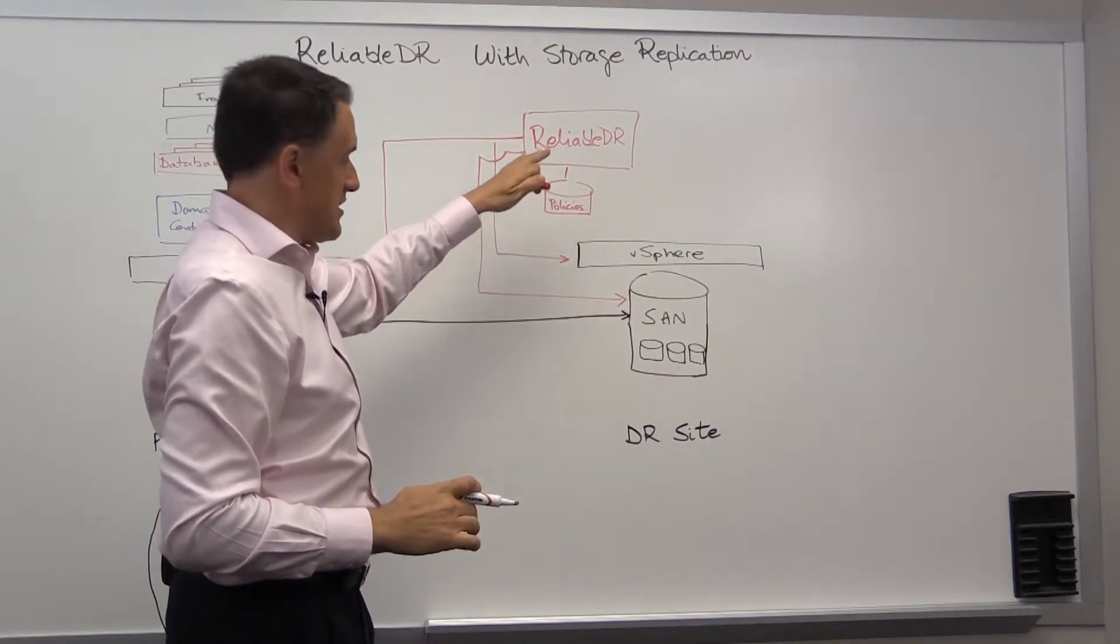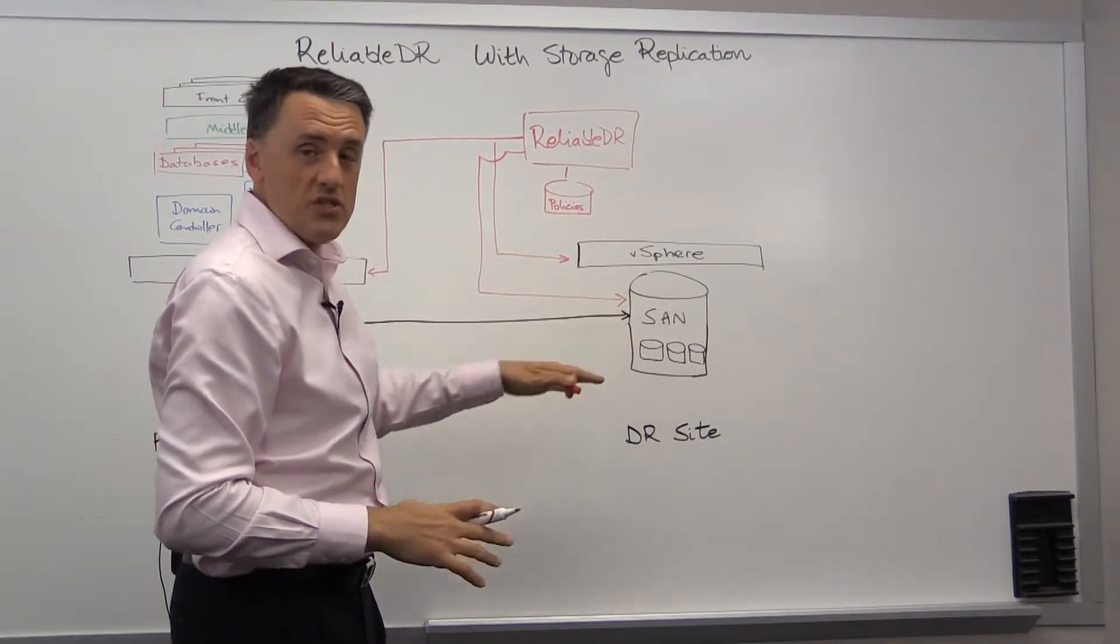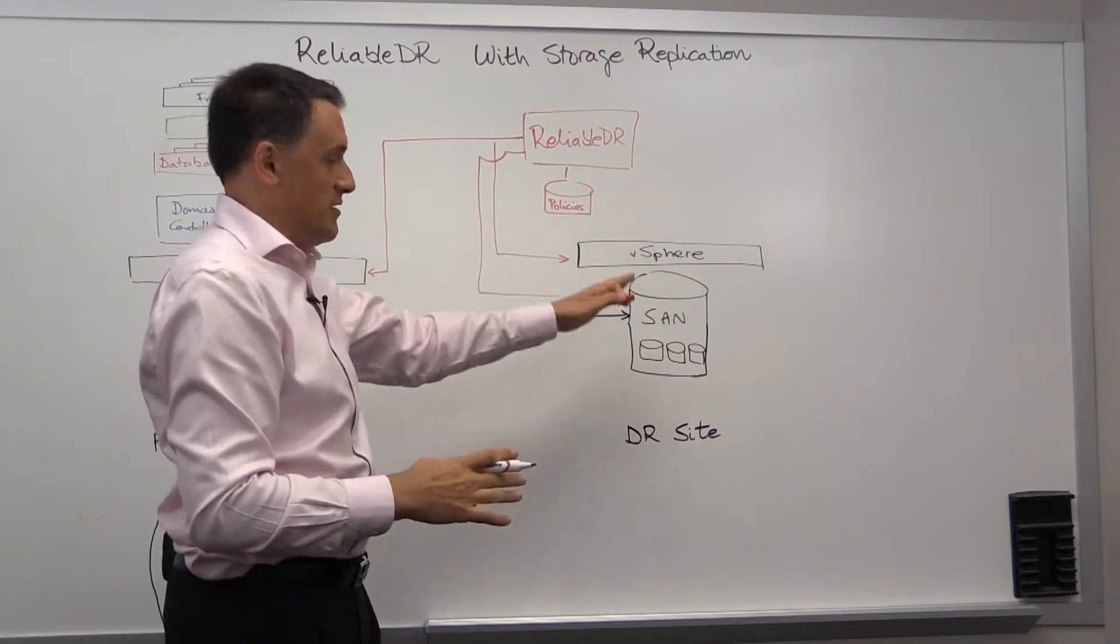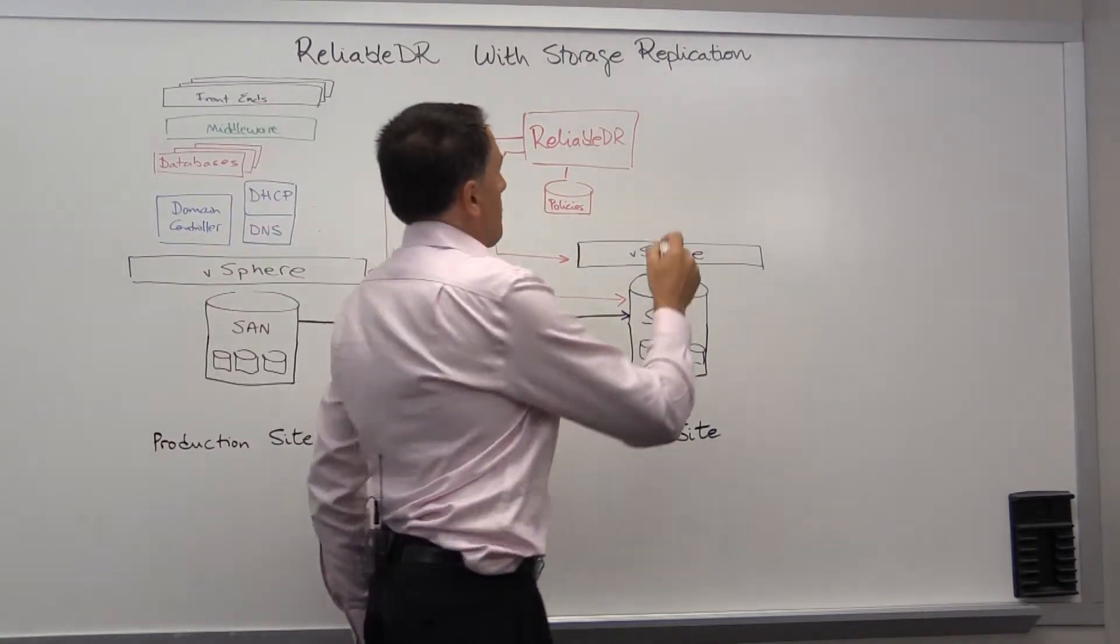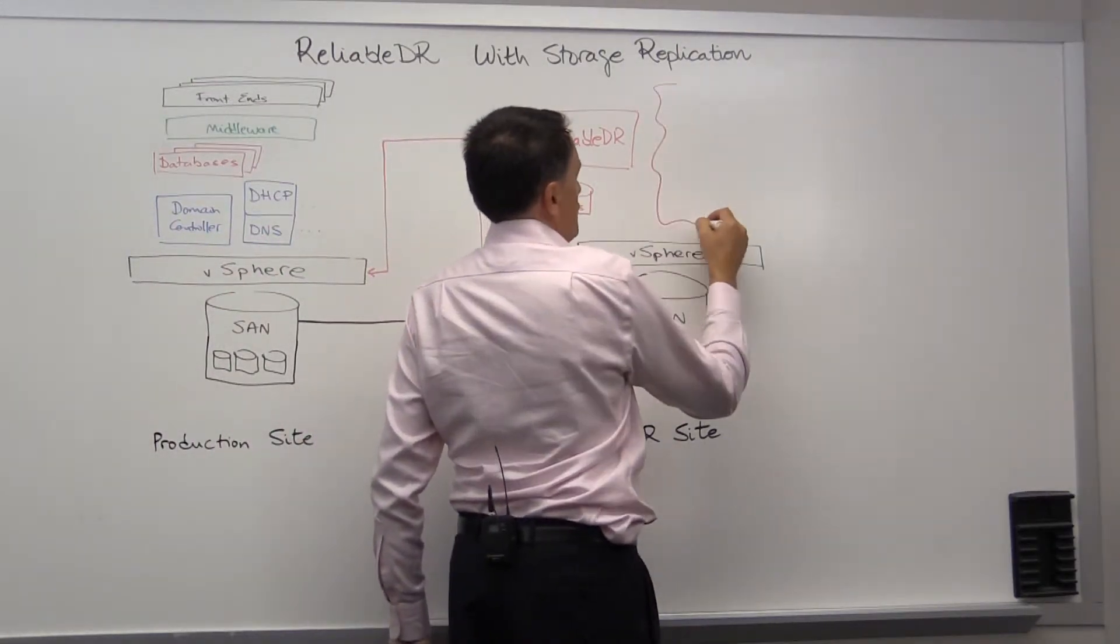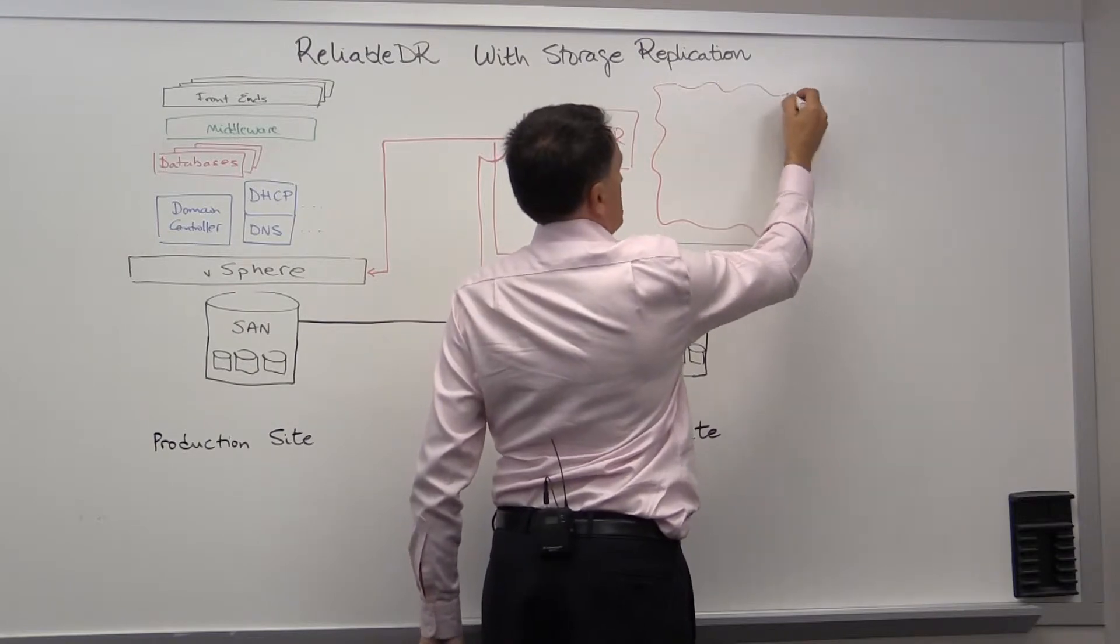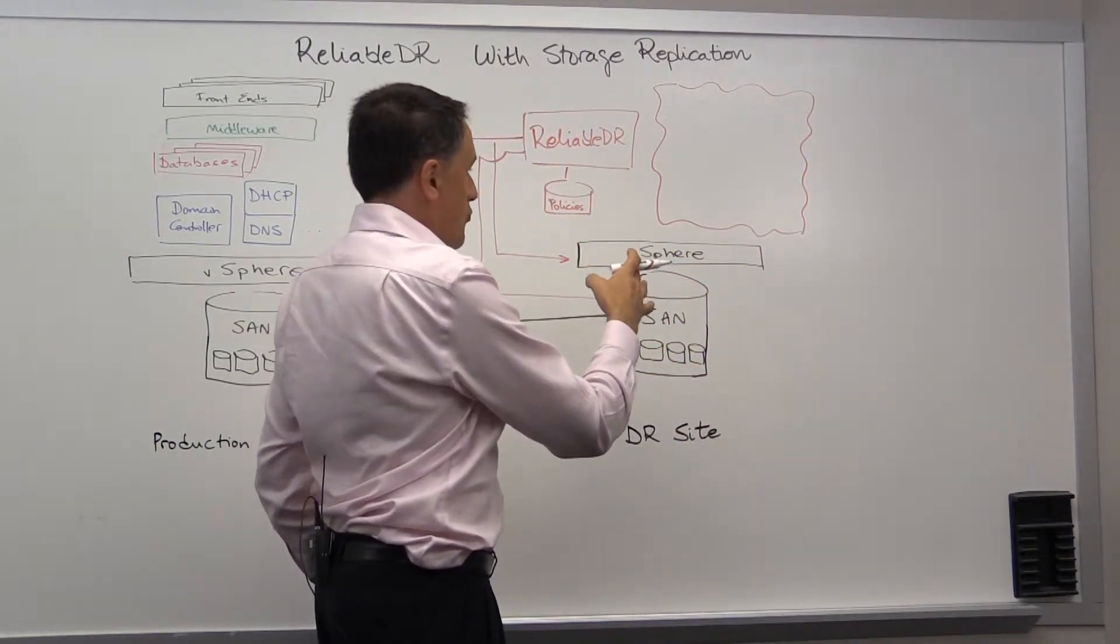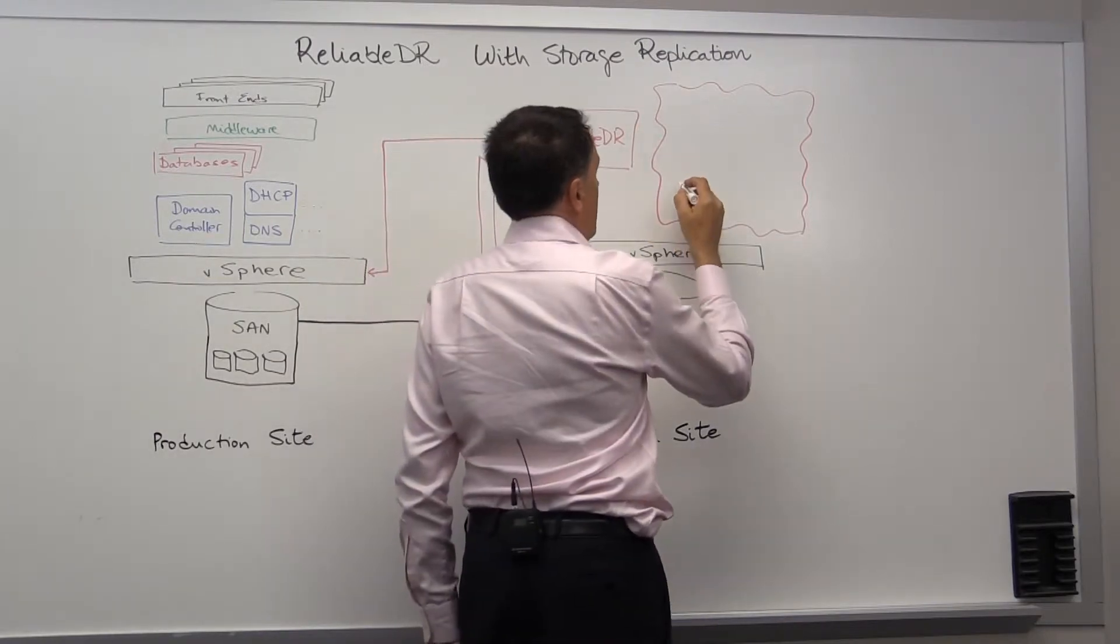what Reliable DR will do is, at periodic intervals, connect to the SAN, create the snapshots of the VMs that are being protected, and then present those VMs to vSphere to create a fenced environment inside of which these VMs will be powered on,